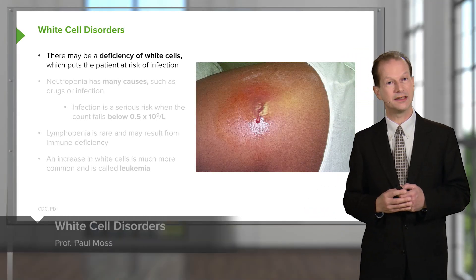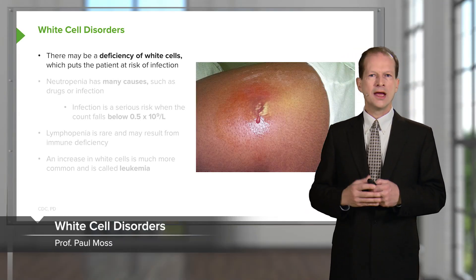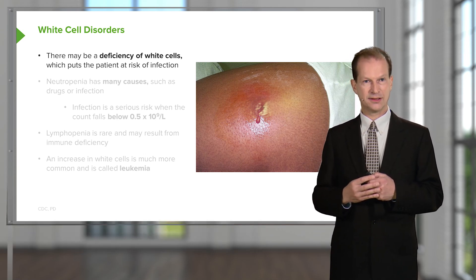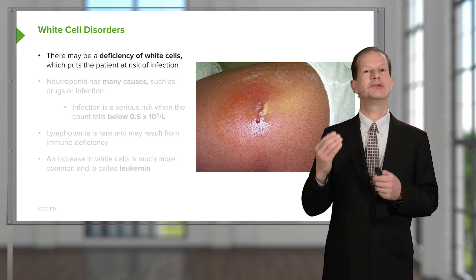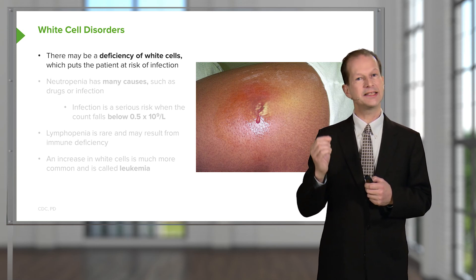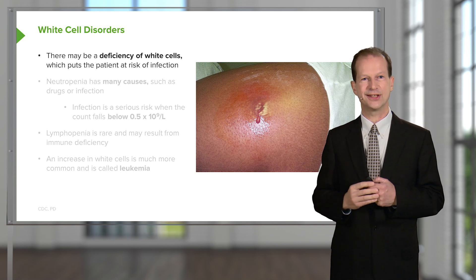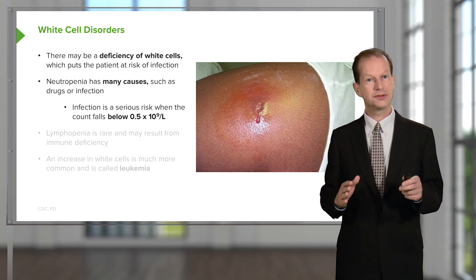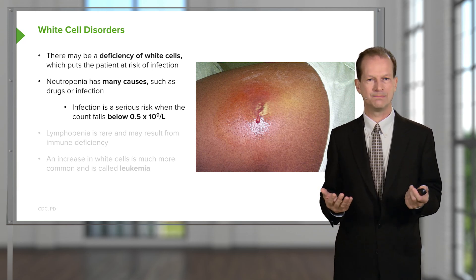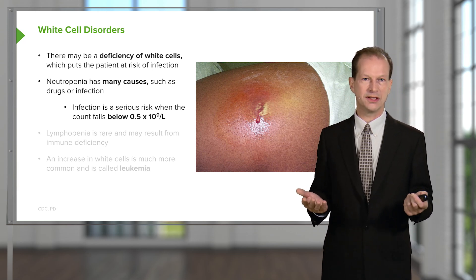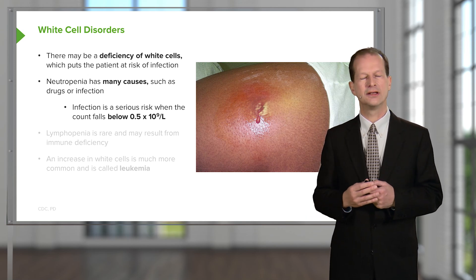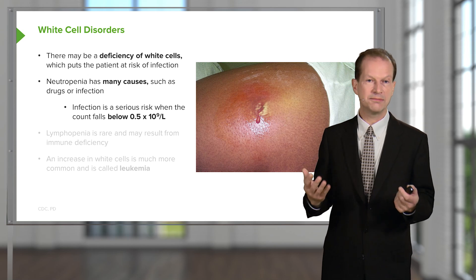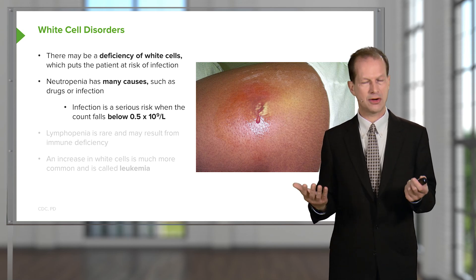Let's turn now to white cell disorders. There may be a deficiency of white cells, which puts the patient at risk of infection because that is the major function of this class of blood cell. Low neutrophils goes under the term neutropenia. There are many causes for this — sometimes it's a drug reaction, sometimes it might be an infection itself, or it could be seen as part of a general bone marrow problem.